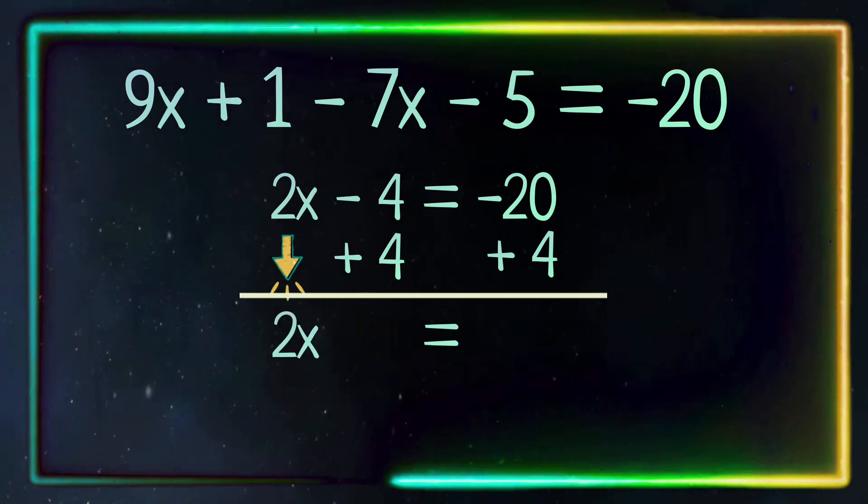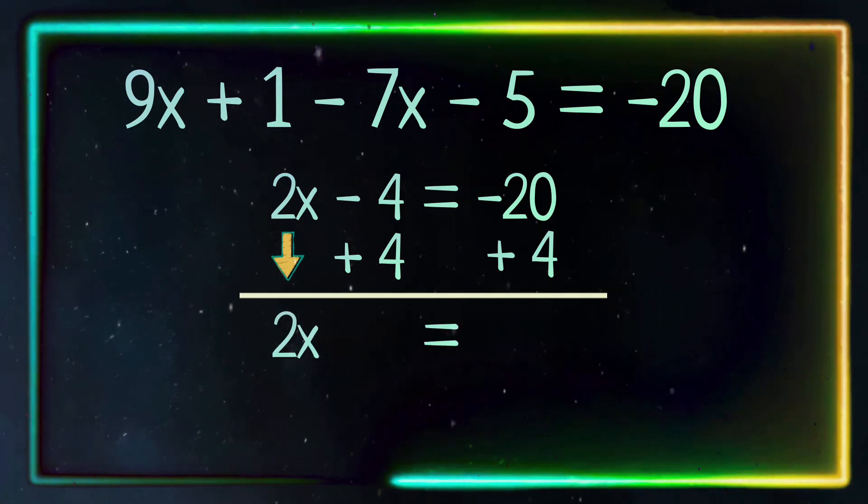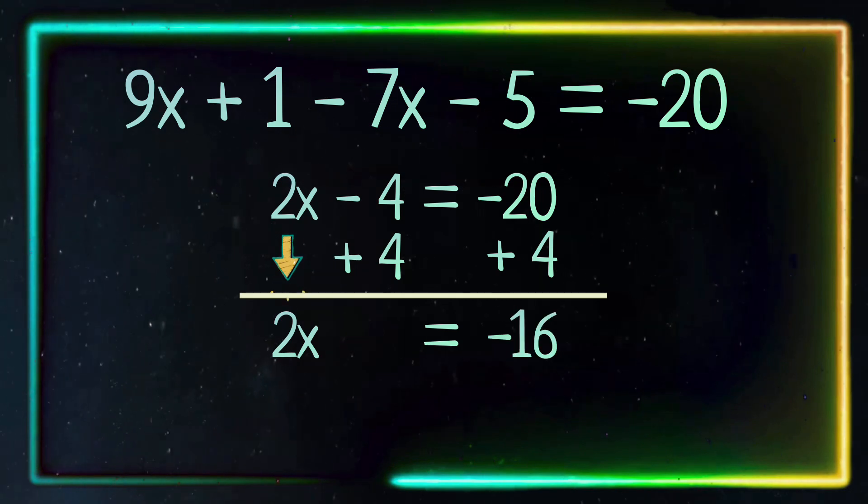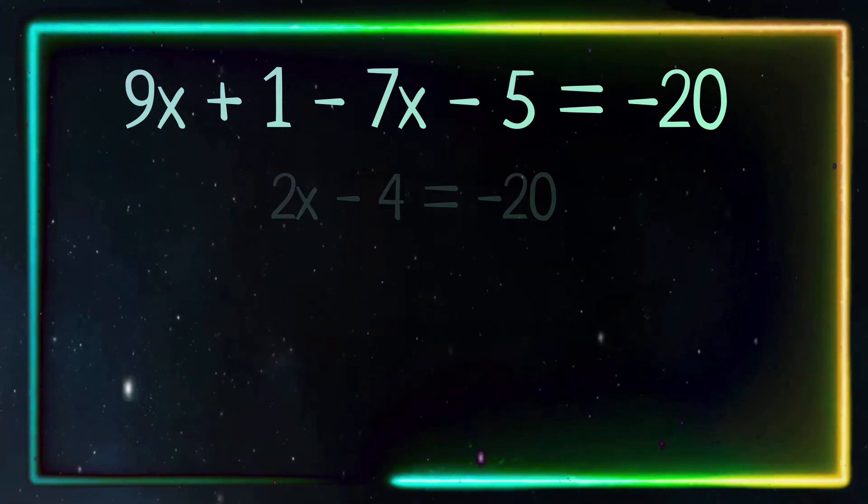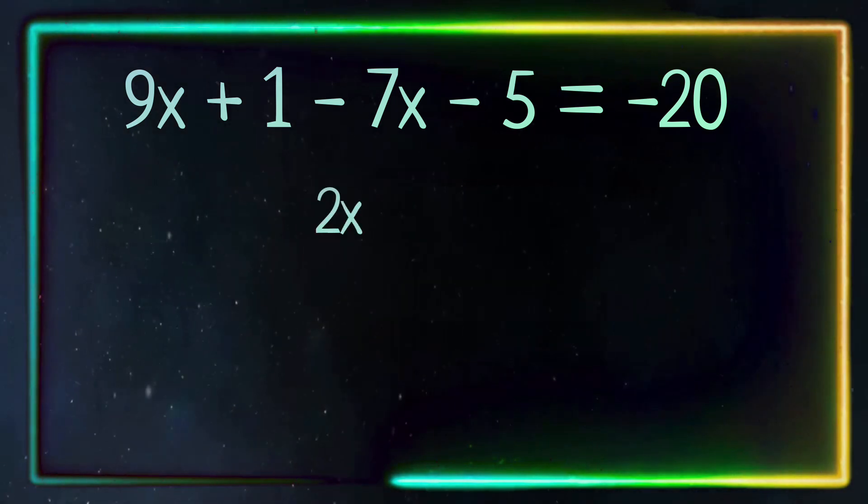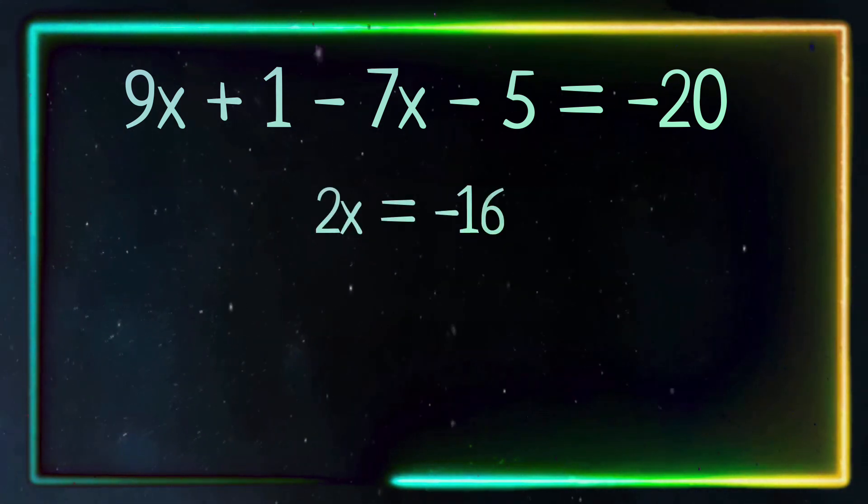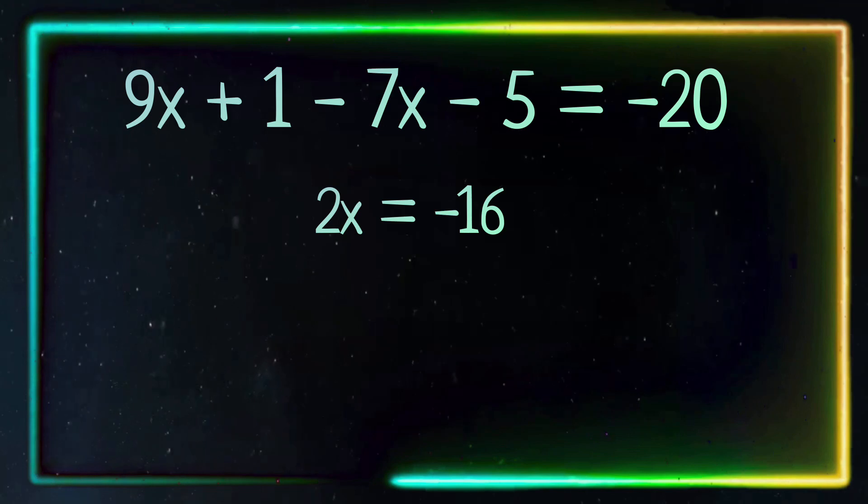Negative 20 plus 4 equals negative 16. Now we're left with 2x equals negative 16.